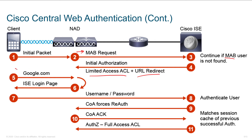As soon as they try to reach out to the internet to go to a site such as Google, we'll see the connection come in, and our switch will grab it and steer it into the ICE login page — which exists on our PSN within the ICE cluster. Once they hit that page, they provide a username and password. If they authenticate successfully, CoA can force re-authentication. Authorization — change of authorization — happens, and we push down a new access list that allows full access, whereas the first ACL was limited access.